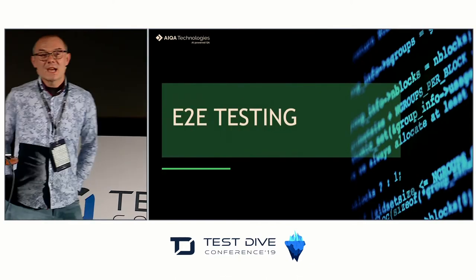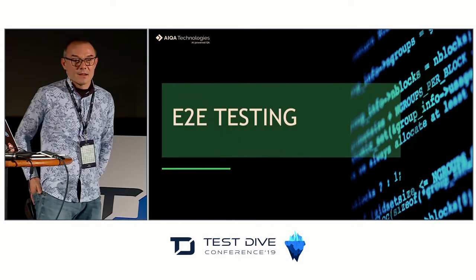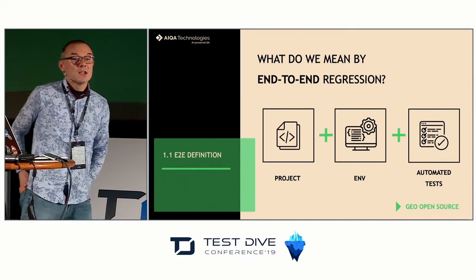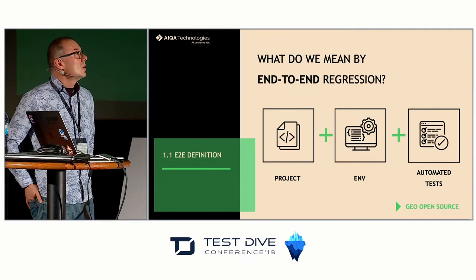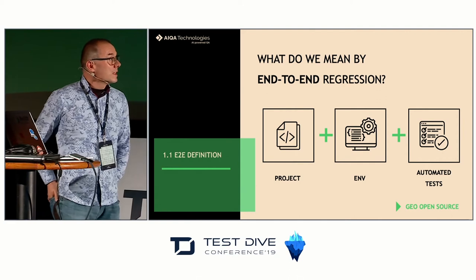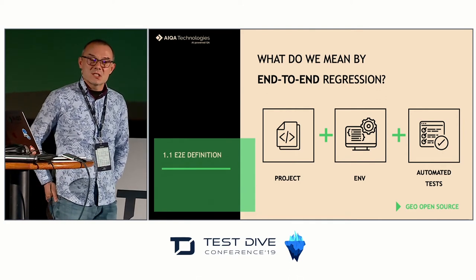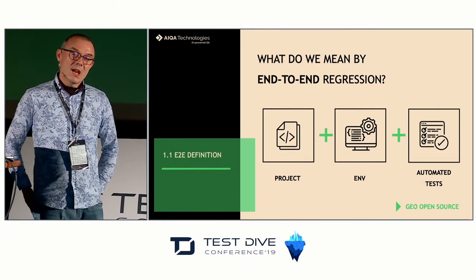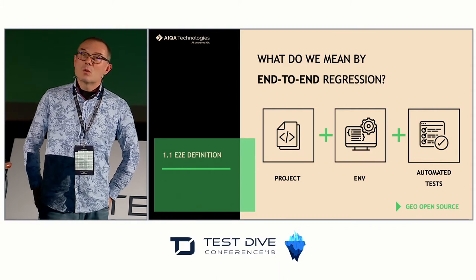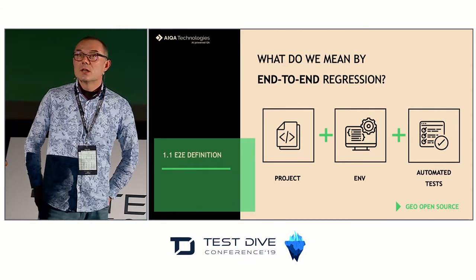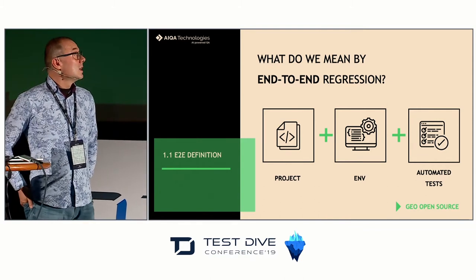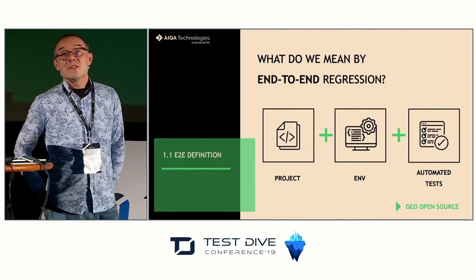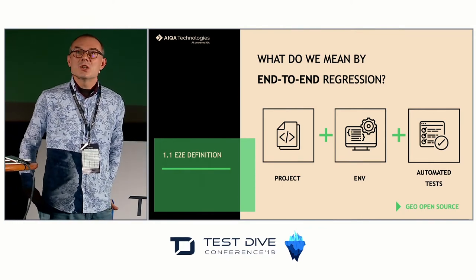For the purpose of this presentation, end-to-end testing will consist of three components: an automated test suite, the project we want to test, and an environment where we can run the complete application. These three components allow us to run the set of tests that verify the quality of the application as a whole.